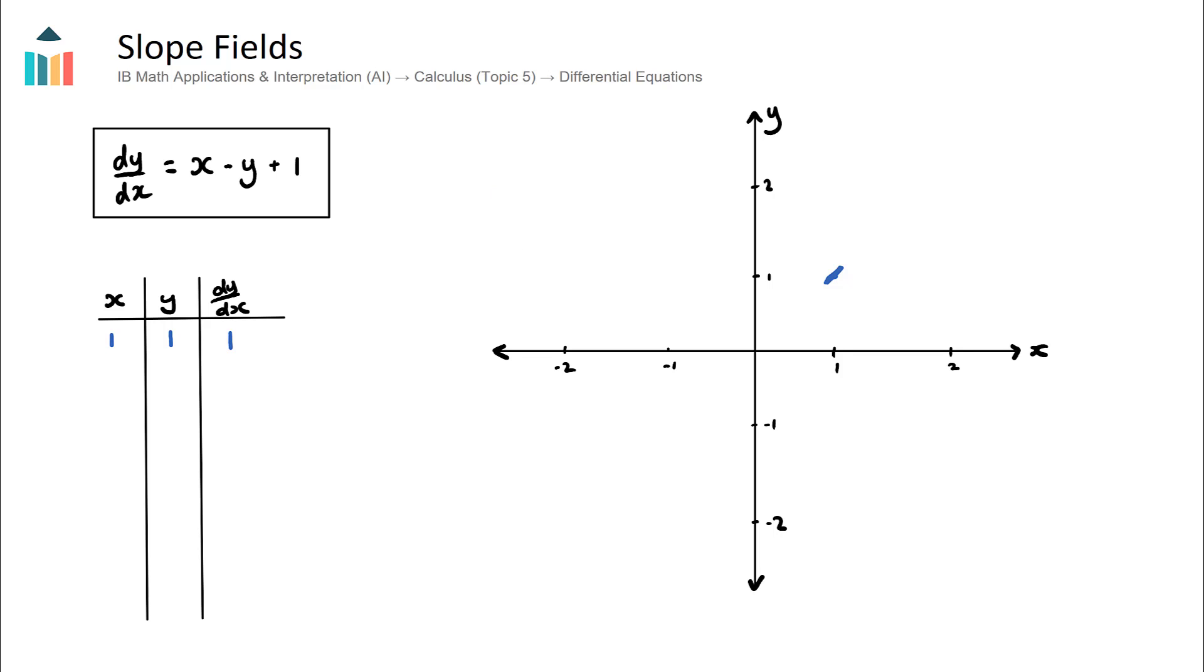Let's try and find some more slopes. This is not too bad. Let's substitute in another x and y values here. Let's try this one right here. This is when x equals 0 and y equals 1. What does dy/dx equal? Let's substitute this in. 0 minus 1 plus 1, that's equal to 0. And what that tells us is that if our solution curve passes through 0, 1, this point right here, the slope of our curve will be 0. So I'm going to put a slope of 0.